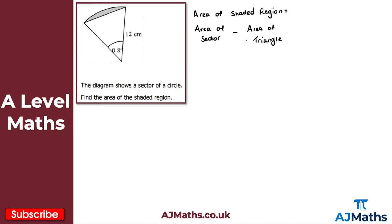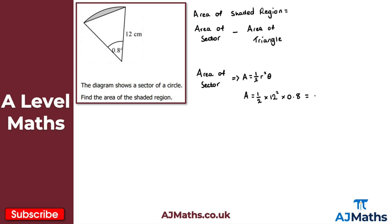Let's begin by finding the area of the sector. The formula is A equals a half r squared theta. Substituting in: a half times 12 squared times 0.8. Putting all that into your calculator, you get 102.4 centimetres squared — that's the area of the sector.